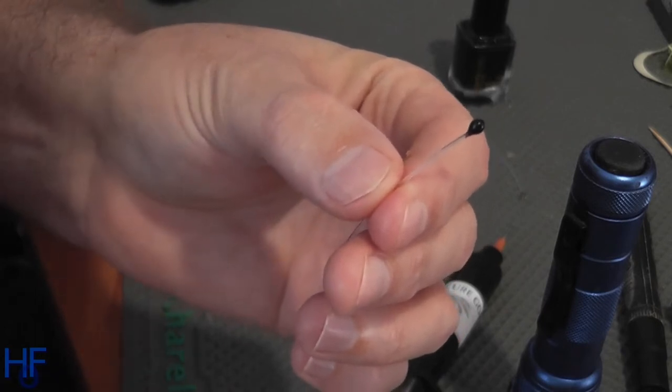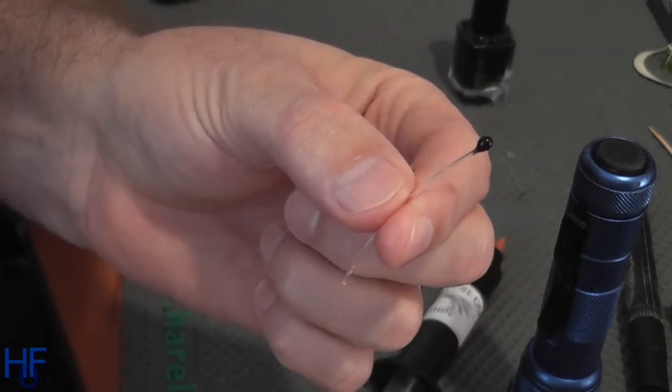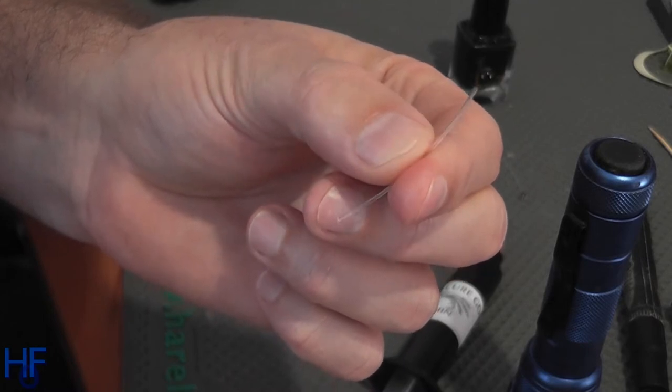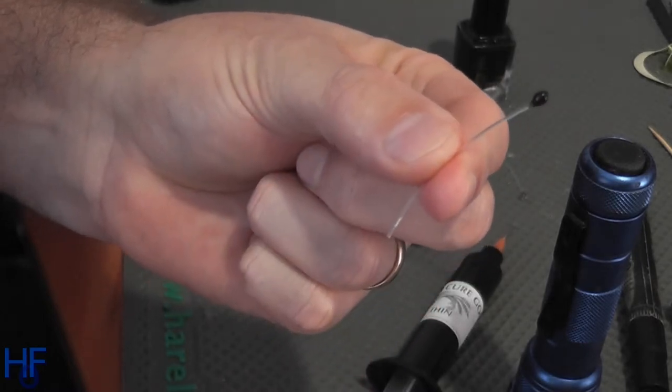So that's it. Let that dry. There you've got it. And then, you just tie that in one either side of whatever it is you're creating and you've got shrimp eyes.